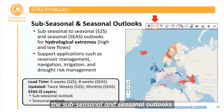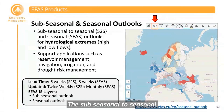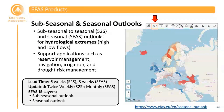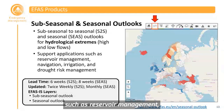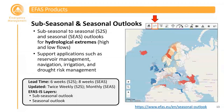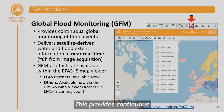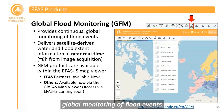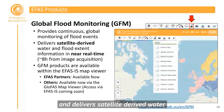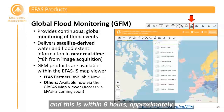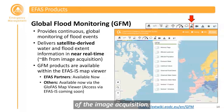We also have the sub-seasonal and seasonal outlooks for hydrological extremes, which provide data on high and low flows. These support applications such as reservoir management, navigation, irrigation, and drought risk management. The global flood monitoring provides continuous global monitoring of flood events and delivers satellite-derived water and flood extent information in near real time, within approximately eight hours of image acquisition.